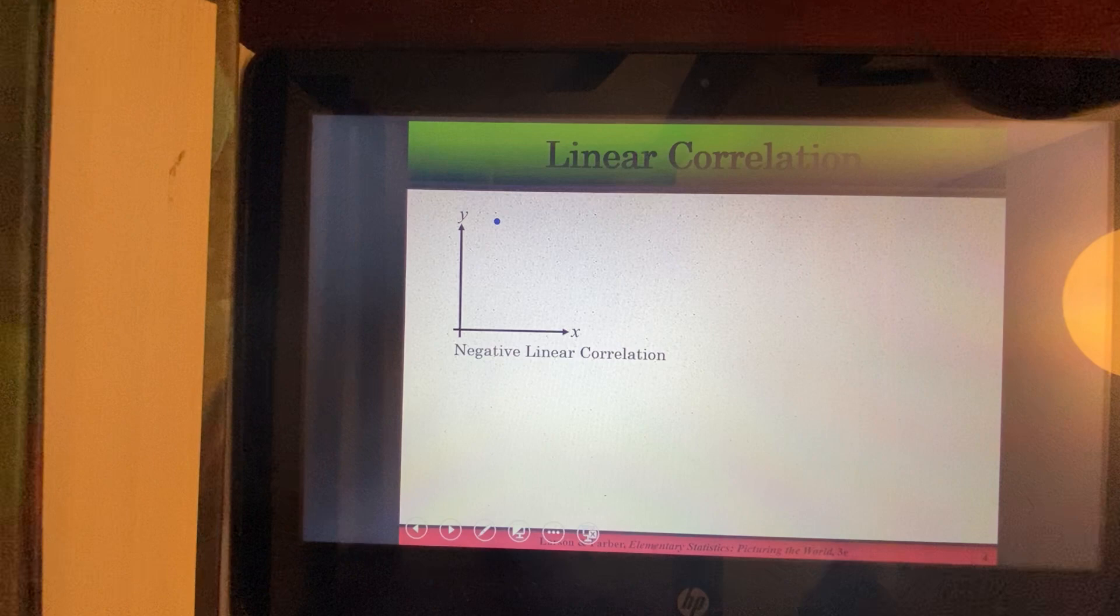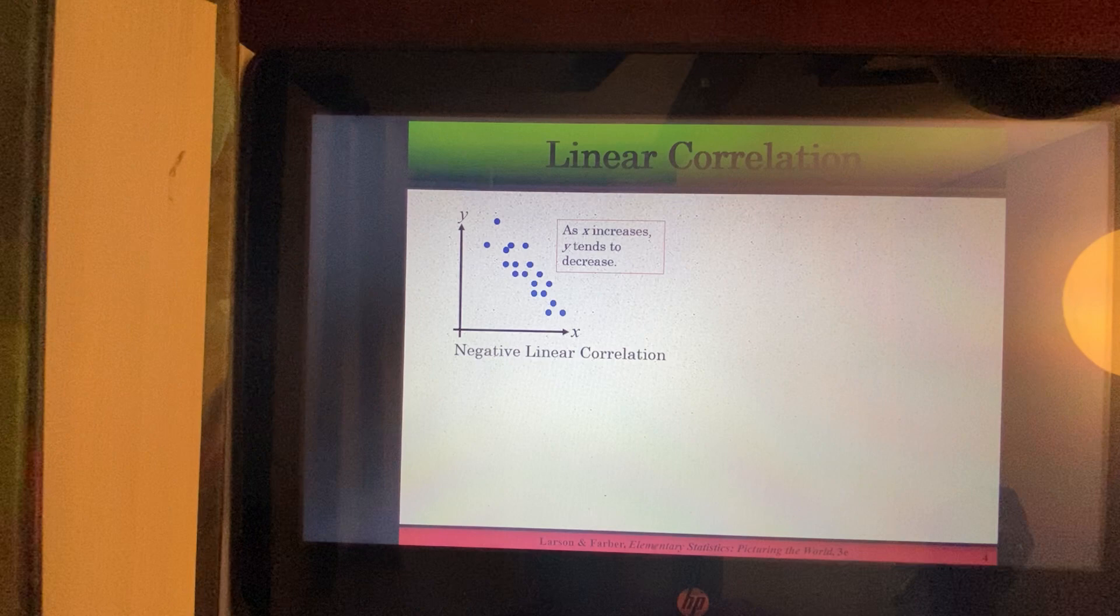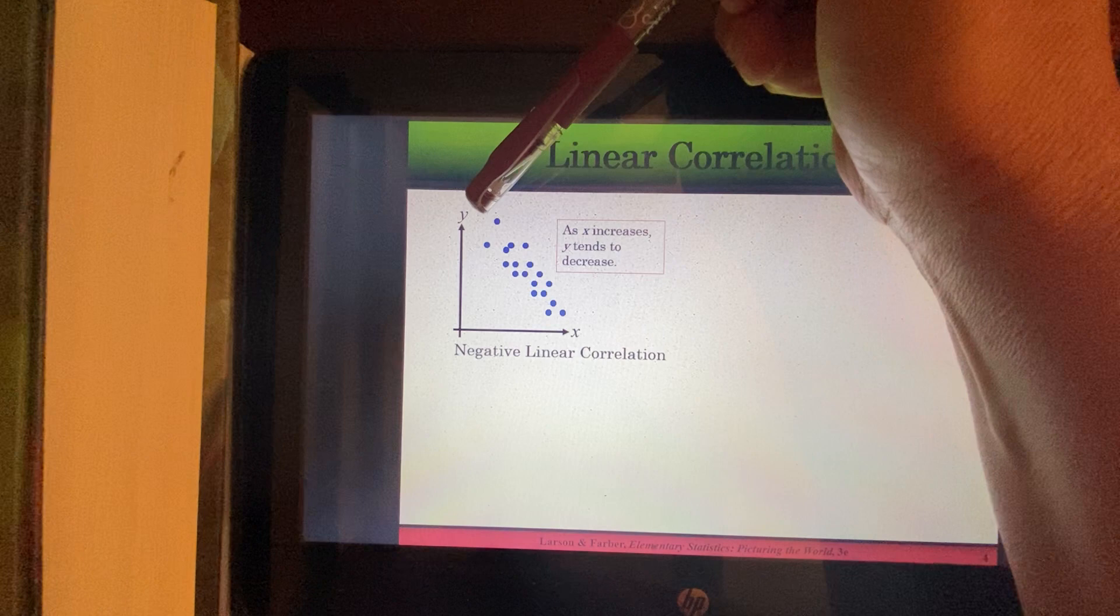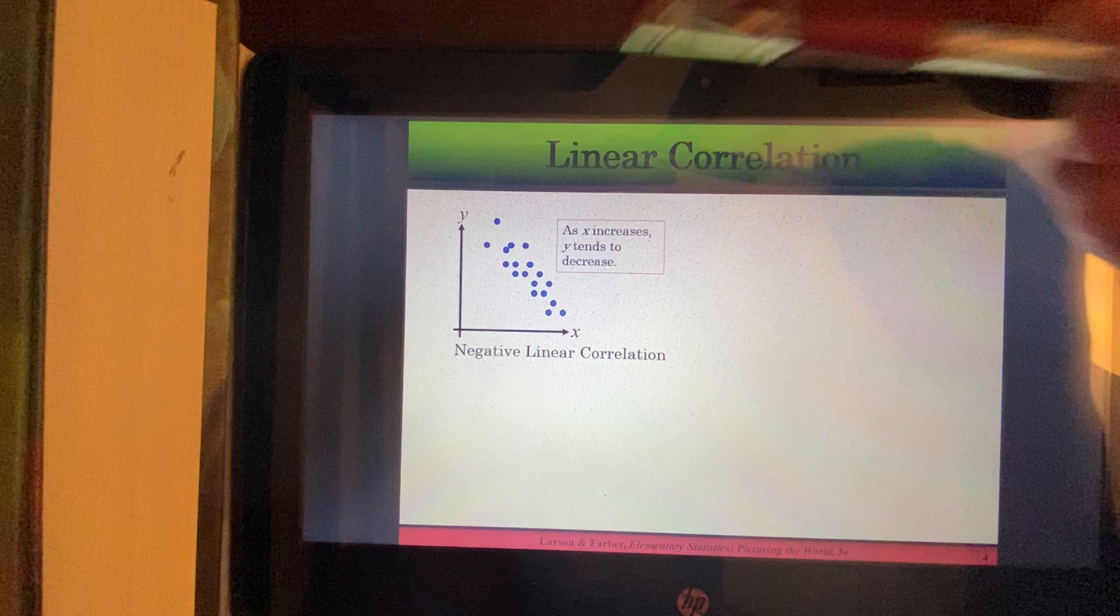Okay, so now we're going to look at different examples of scatter plots. Here, we're looking at a scatter plot where we have negative linear correlation. Okay, because if I was to draw a straight line the best that I could through this data, it would have a negative slope. And you'll see that as your x increases, or we're moving further to the right, y tends to decrease. Because the y, as you're moving further to the right, is going down.